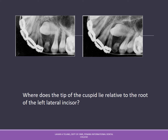Clinical question: where does the tip of the cuspid lie relative to the root of the left lateral incisor? In image one the impacted canine or cuspid is very close to the lateral incisor. After taking a second image with the shift technique, the cuspid has moved closer to the central incisor. Based on the direction of the premolar roots and which teeth are more visible, we determine the x-ray cone was shifted mesially. Since the canine also moved mesially — the same direction as the cone — it is located on the lingual or palatal aspect.